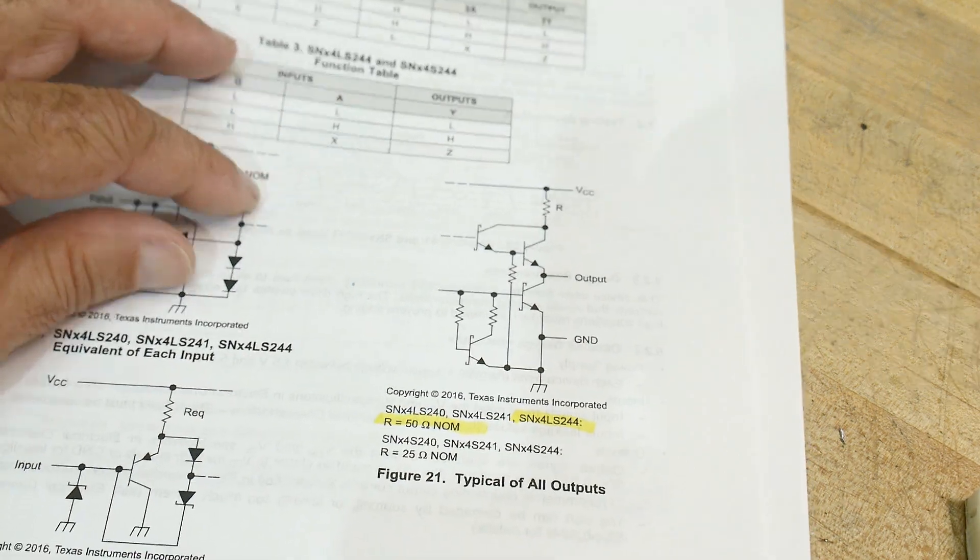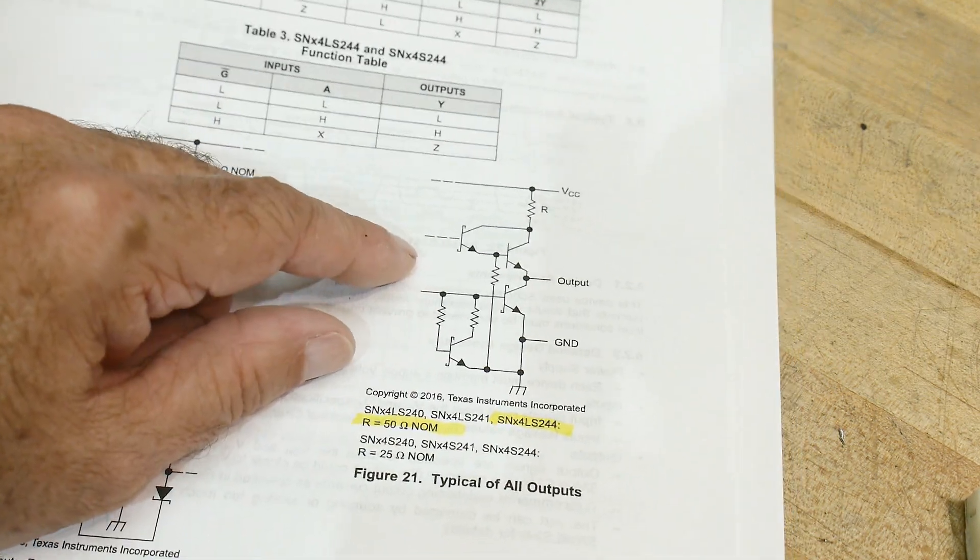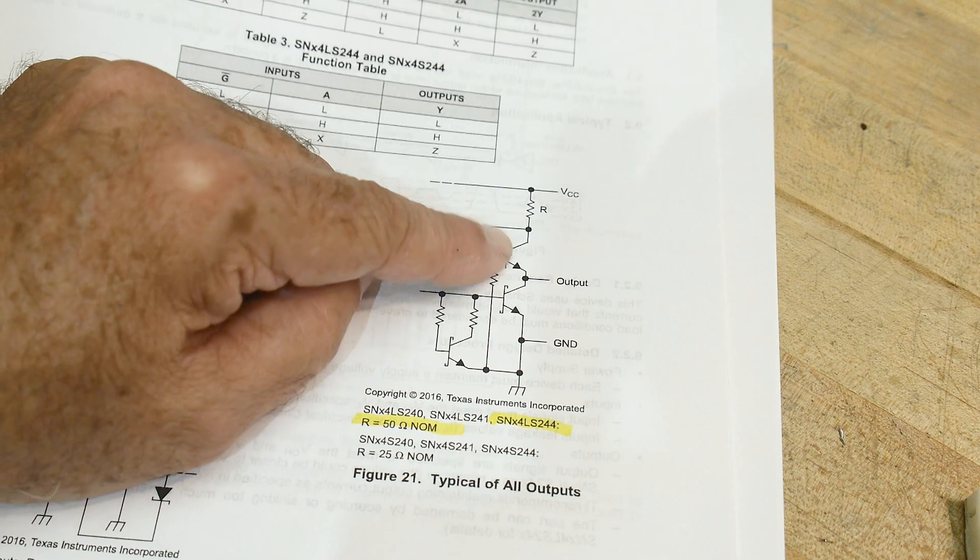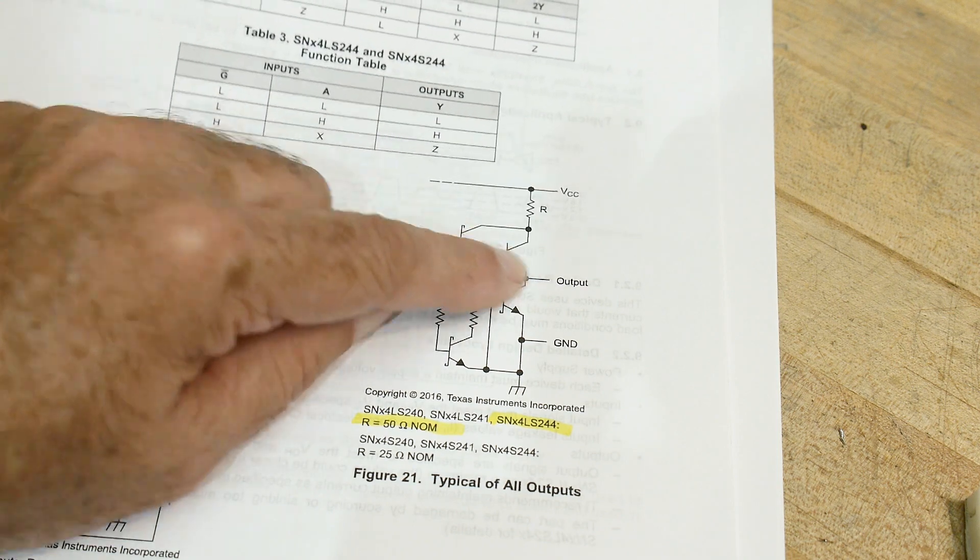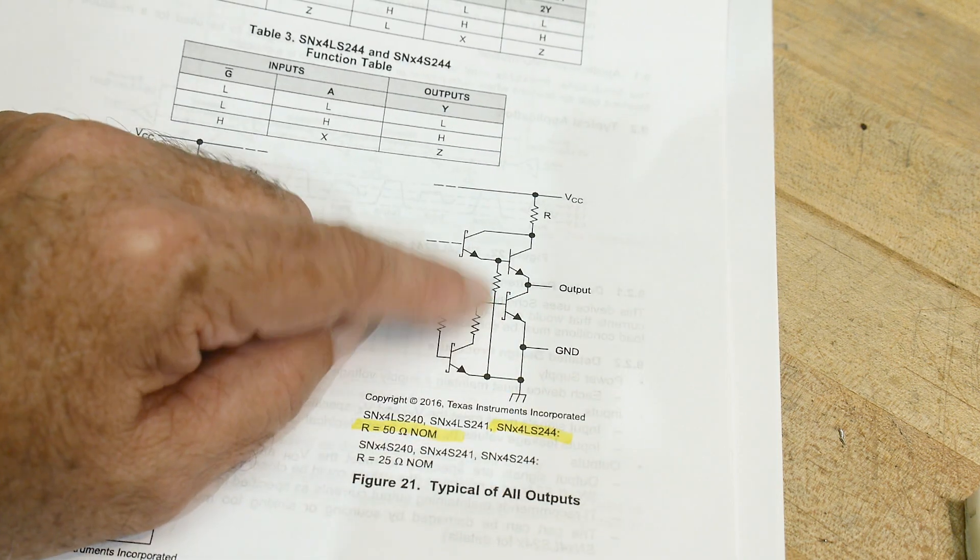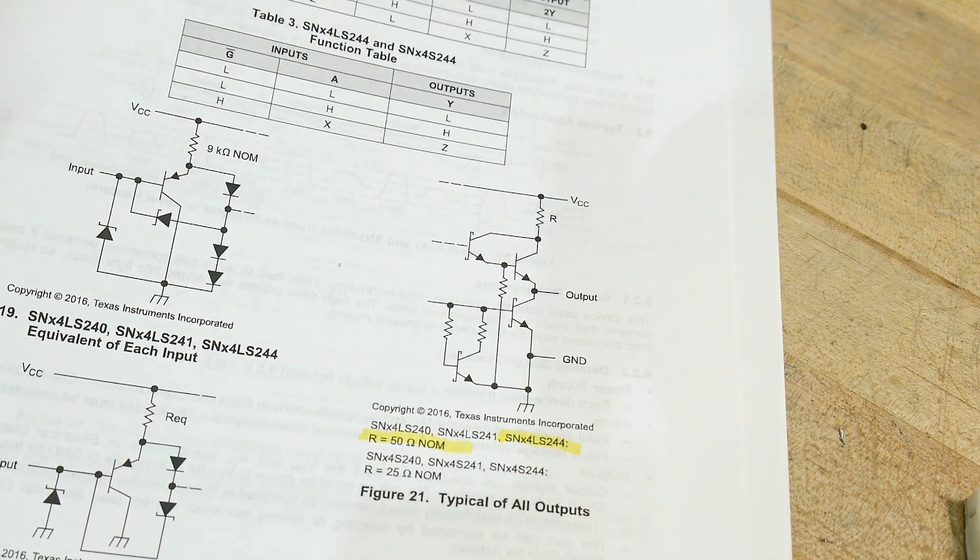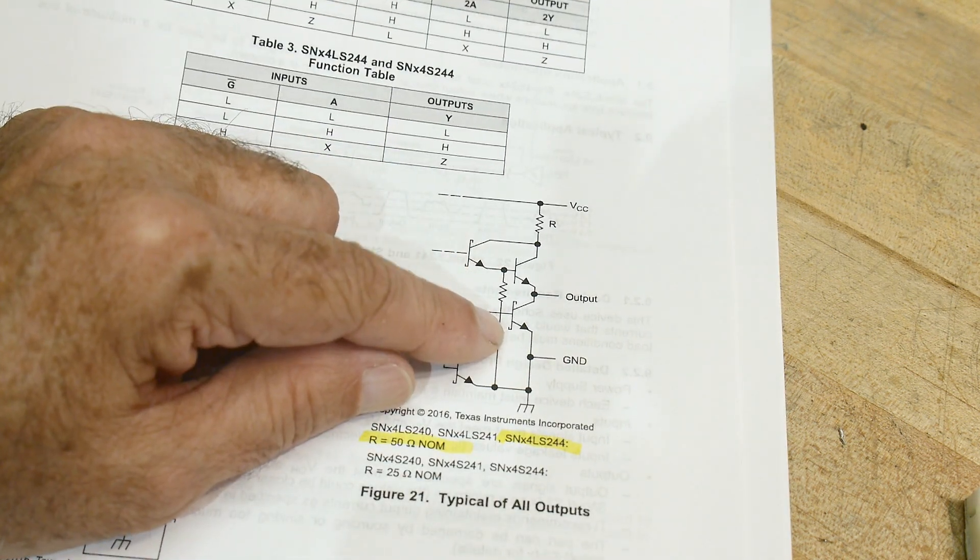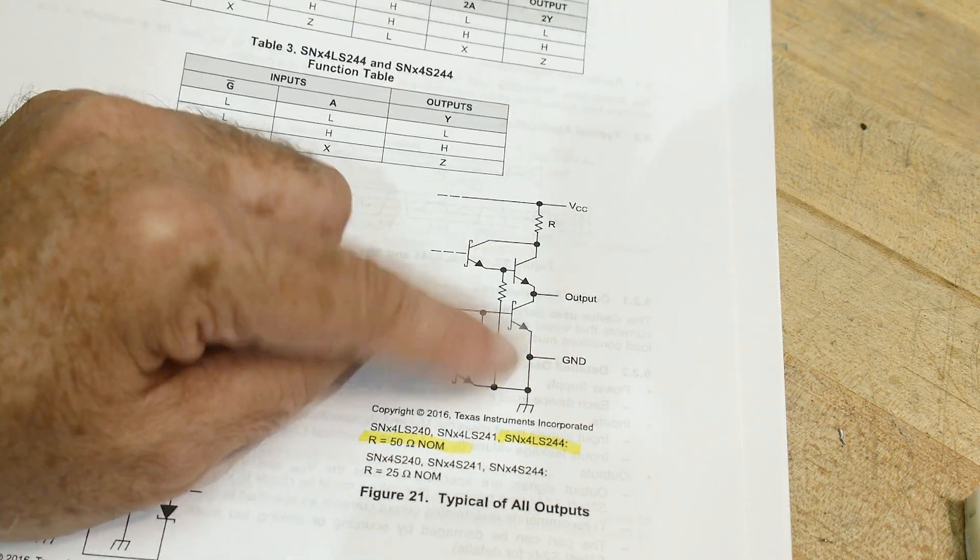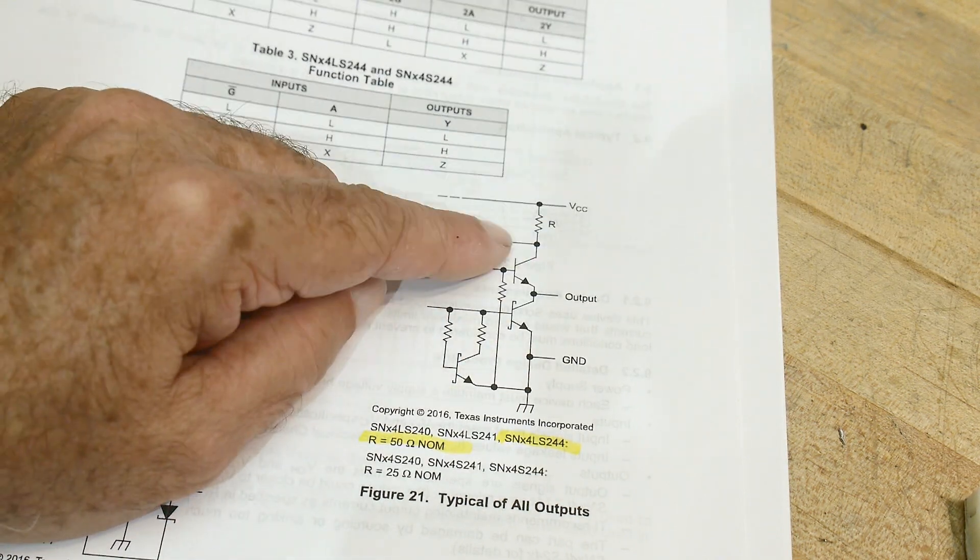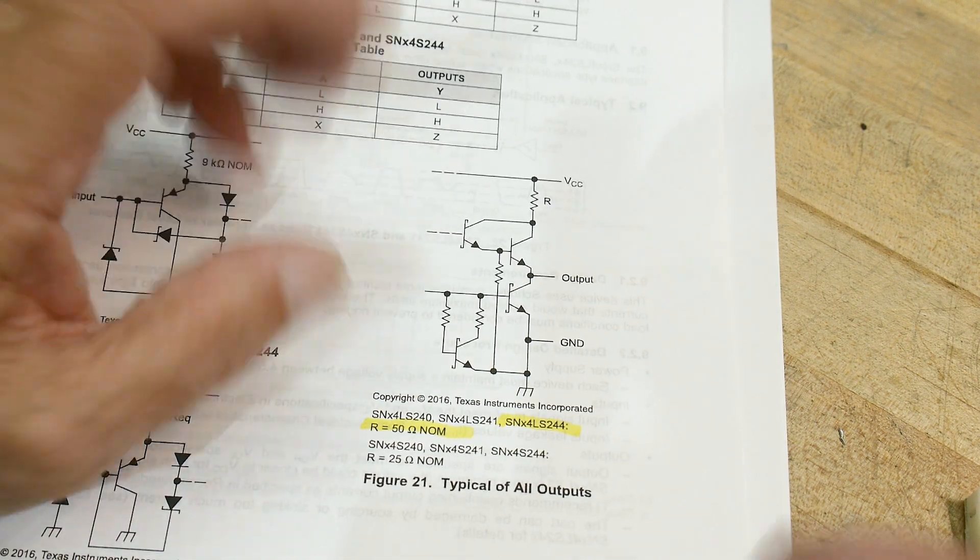All right. So, there's going to be two transistors, one that pulls up and one that pulls down, and that's the way most circuits work. And so one state is low, one state is high, and one state is nothing.